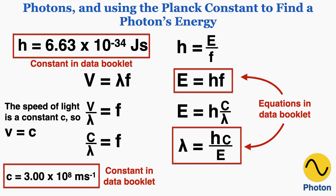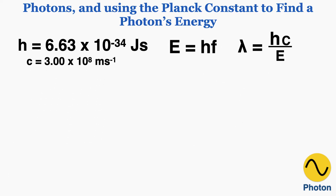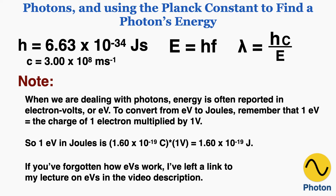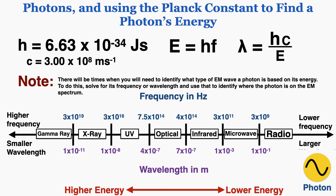We now have a way of connecting the frequency, wavelength, and energy of any photon. Before doing examples, note that when dealing with photons, energy is often reported in electron volts or eV. To convert from electron volts to joules, remember that one electron volt equals the charge of one electron multiplied by one volt, which works out to 1.60 times 10 to the negative 19th joules. There will also be times when you need to identify what type of EM wave a photon is based on its energy — to do this, solve for its frequency or wavelength and use that to identify where the photon falls on the EM spectrum.